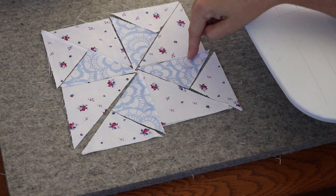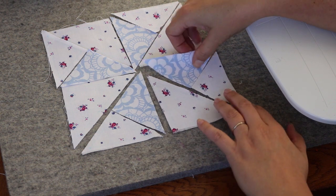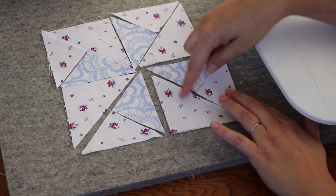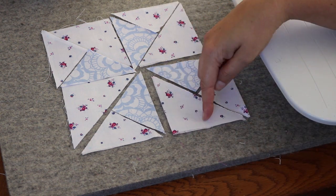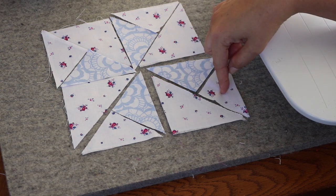This fun pinwheel block is a four patch. Each of the units is made of three pieces. It's half a half square triangle and half of a quarter square triangle.